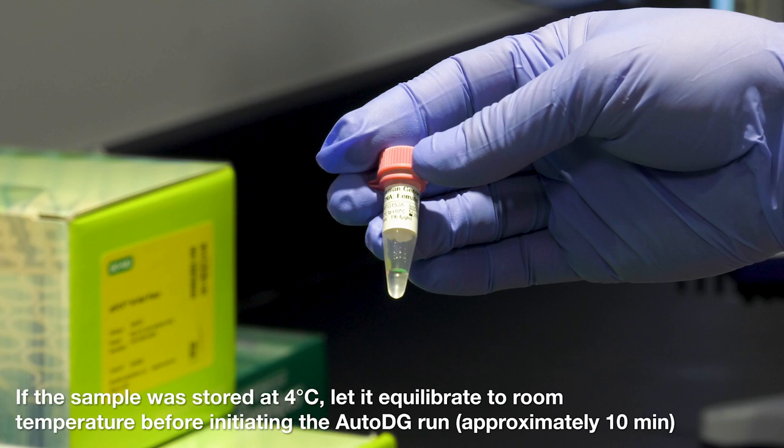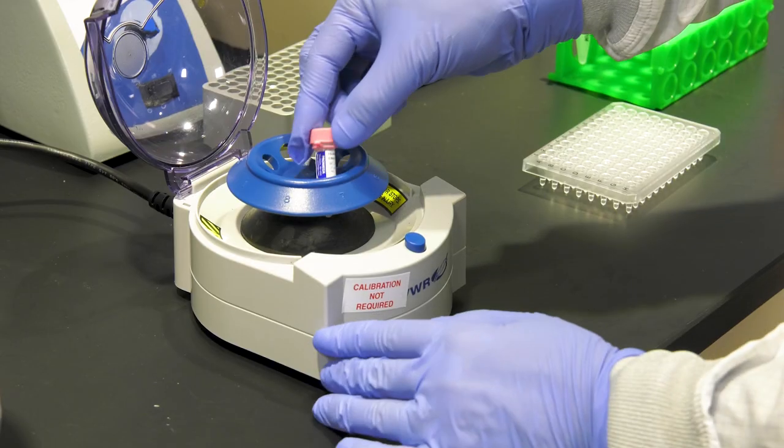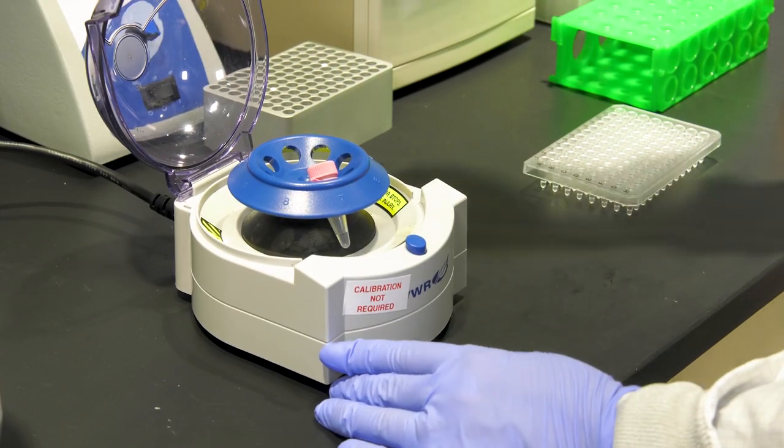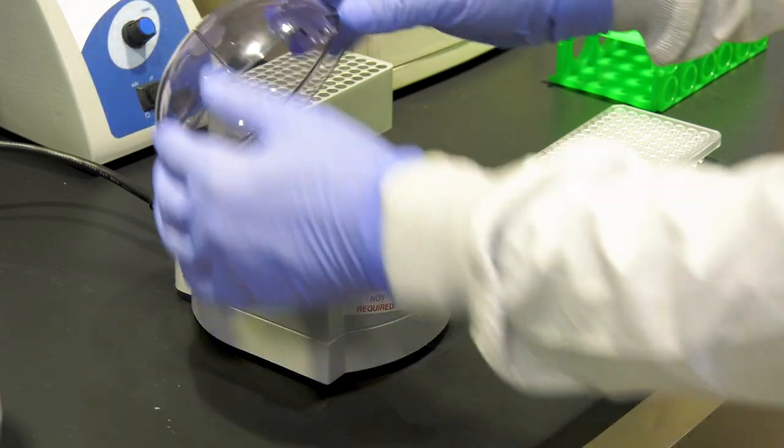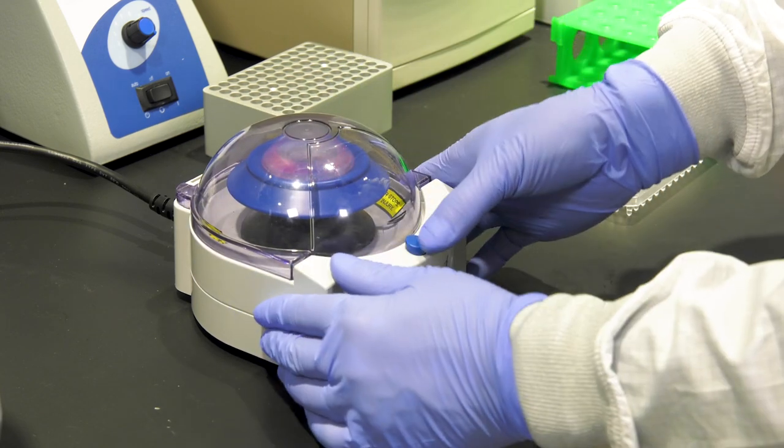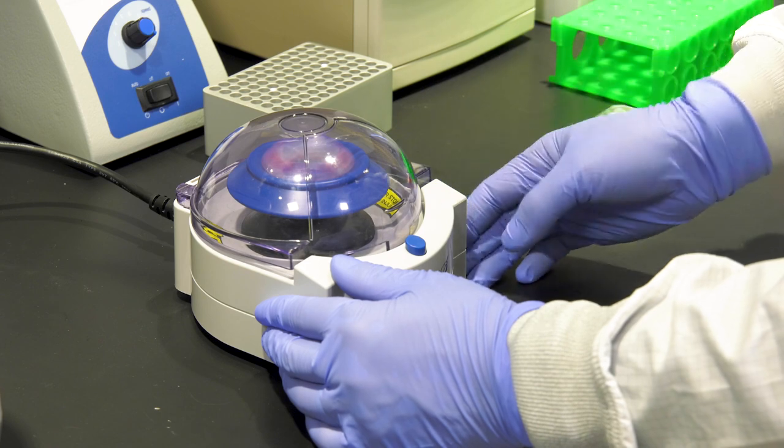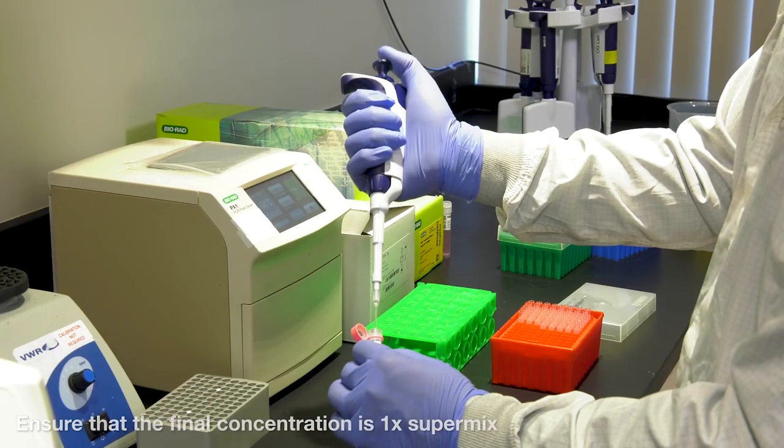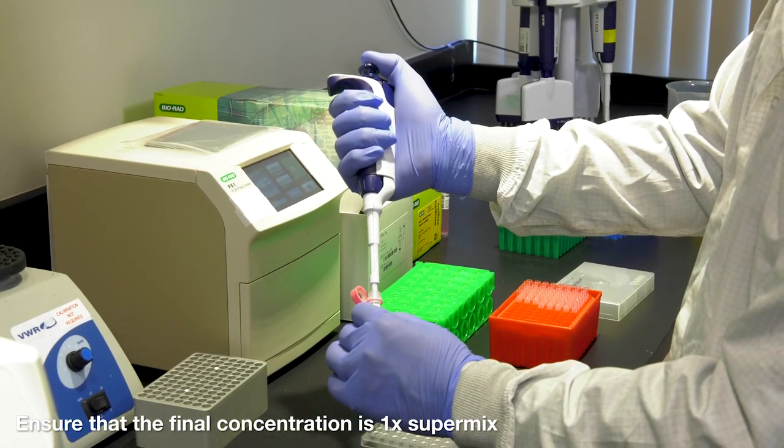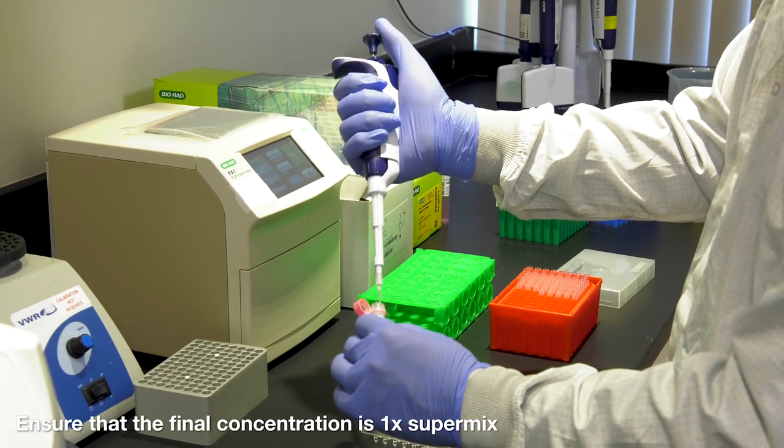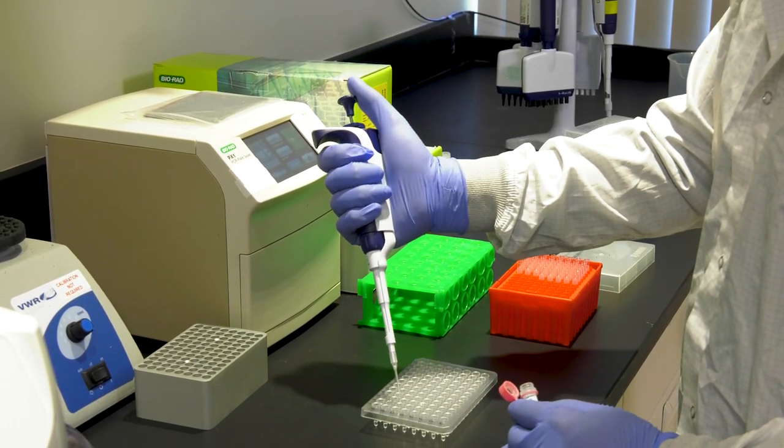Finally, make sure that the final component, the nucleic acid template, has equilibrated to room temperature if it was stored at 4 degrees Celsius or that it's completely thawed if it was in the freezer. Give the tube a quick mix and spin in a tabletop centrifuge. Then, add the appropriate amount to bring the final reaction mix in the 96 well plate to a 1X concentration.